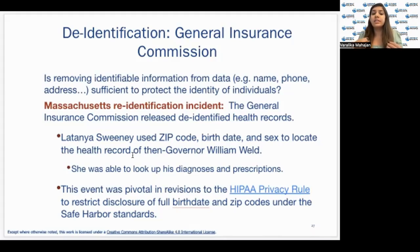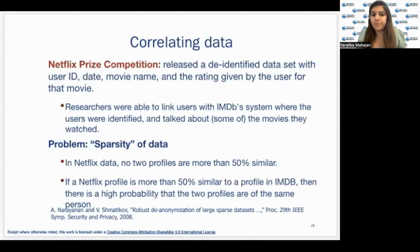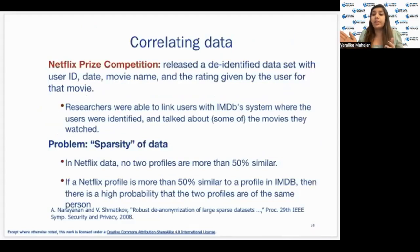zip codes under the safe harbor standards. So even de-identification needs to be done correctly because some data points can help us reach another, or a group of data points. Another example of how data can be correlated from one data point to another: